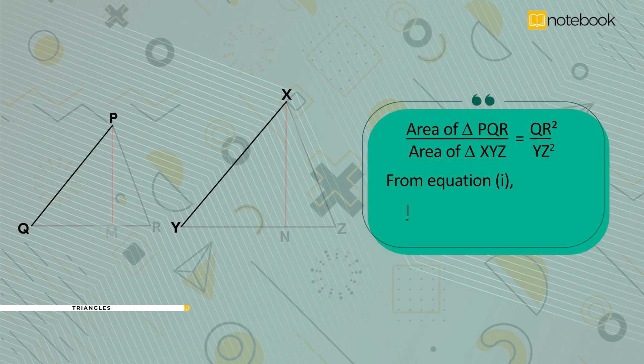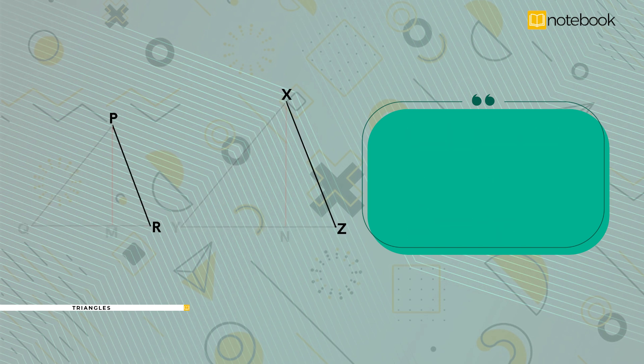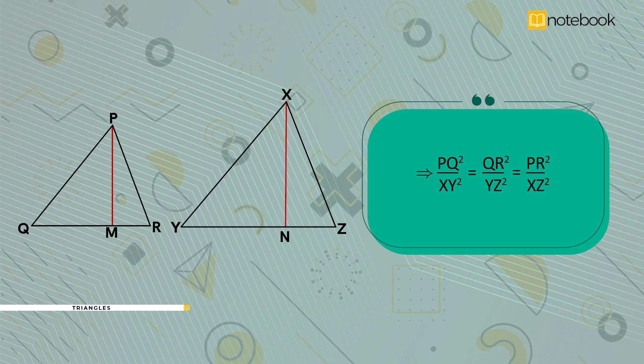But from equation 1, PQ by XY is equal to QR by YZ is equal to PR by XZ. This implies PQ square by XY square is equal to QR square by YZ square is equal to PR square by XZ square.